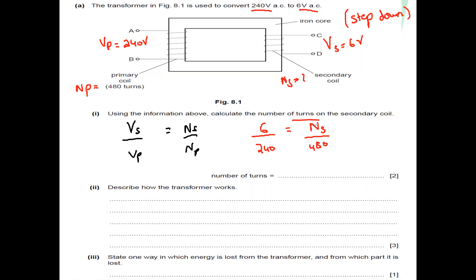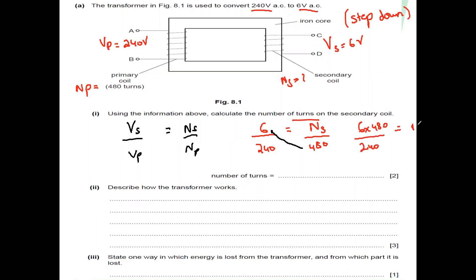Our subject is the number of turns of the secondary. Rearranging: NS equals 6 multiplied by 480 divided by 240. Simplifying: 480 divided by 240 is 2, and 6 multiplied by 2 equals 12. So the number of turns of the secondary is equal to 12.